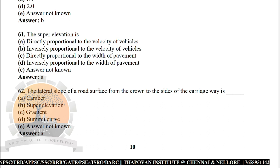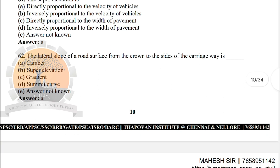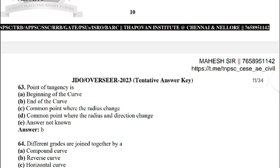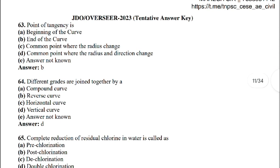Next: the super elevation is — the correct answer is: directly proportional to the velocity of the vehicle. Next: the lateral slope of the road surface from the centre to sides of the carriageway is — the correct answer is option A: camber.